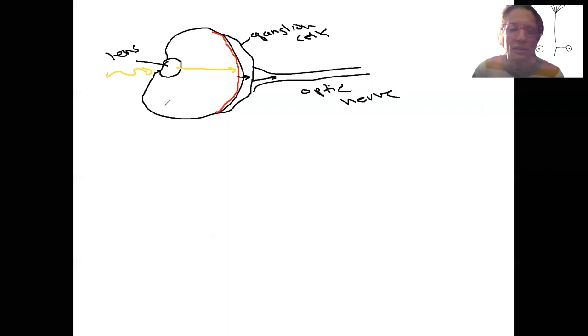So this is our squid. He or she has no blind spot. This is how you think you design an eye. However, humans and many vertebrates. Here's our lens. Here's our eye.